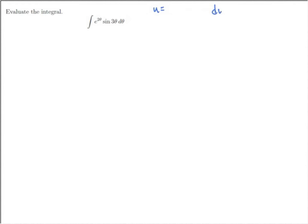I want to make assignments for u and dv. Normally we try to make an assignment for u so that when we take the derivative we simplify things, and whatever is left as dv we can find the antiderivative for. Notice the derivative of e to the 2 theta is 2 e to the 2 theta — that doesn't really simplify — and the derivative of sine of 3 theta is 3 cosine of 3 theta, so that doesn't simplify either. But we're going to try it anyway. Let u equals e to the 2 theta, and dv be sine of 3 theta d theta.